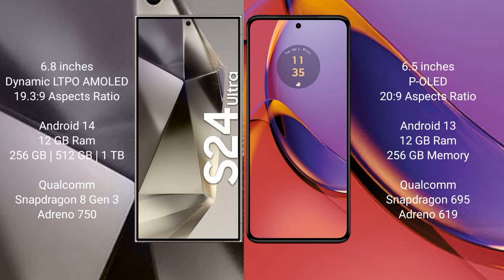Samsung Galaxy S24 Ultra runs on the Android 14 operating system. Motorola Moto G84 also runs on Android 14. Samsung Galaxy S24 Ultra comes with 12GB RAM and 256GB, 512GB, or 1TB internal storage.